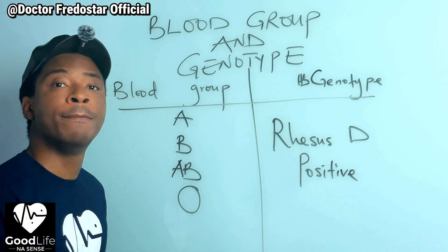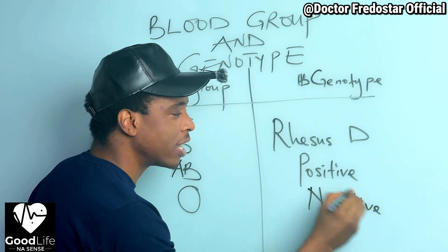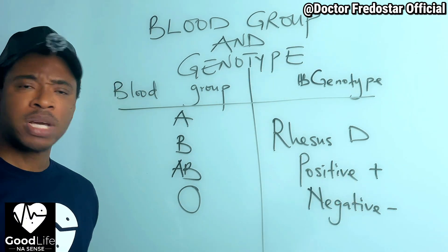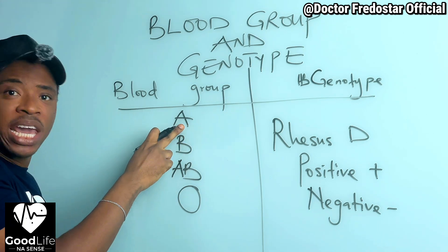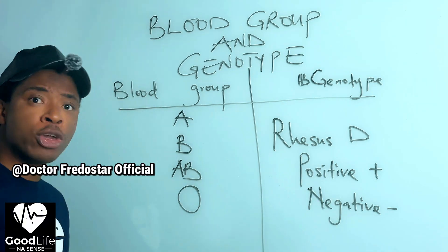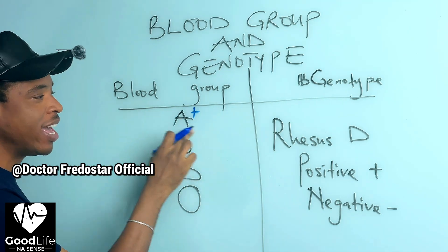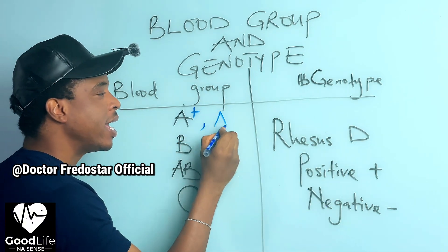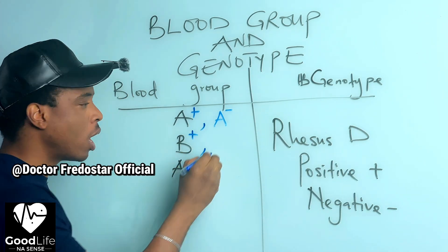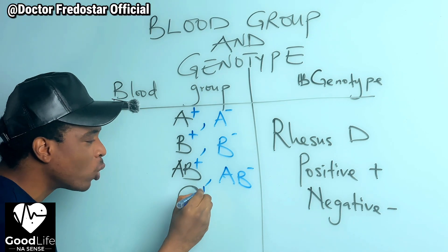Every human being is either Rhesus D positive or Rhesus D negative. So after they check whether you are A, B, AB, or O, they will also check whether you are Rhesus positive or Rhesus negative. They will tell you: you are A positive, meaning A Rhesus D positive, or A negative, meaning A Rhesus D negative. You can be B positive or B negative, AB positive or AB negative, O positive or O negative.